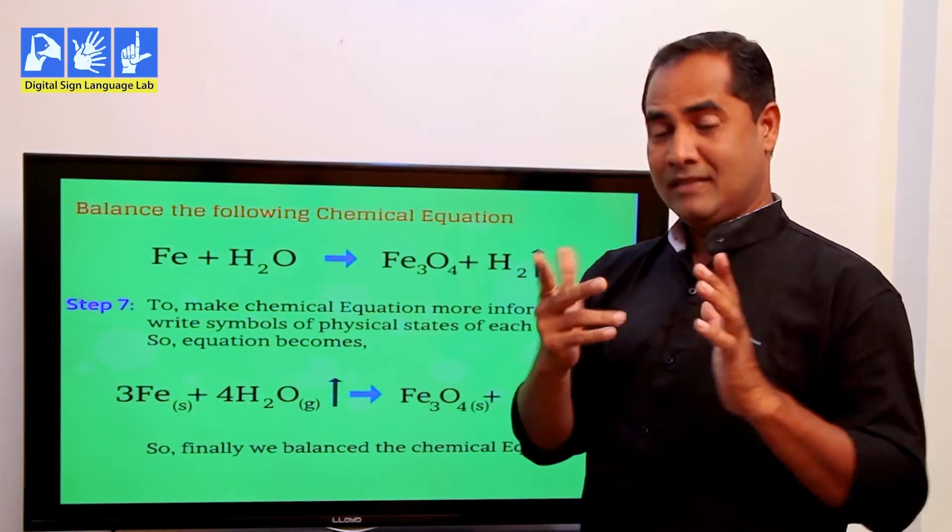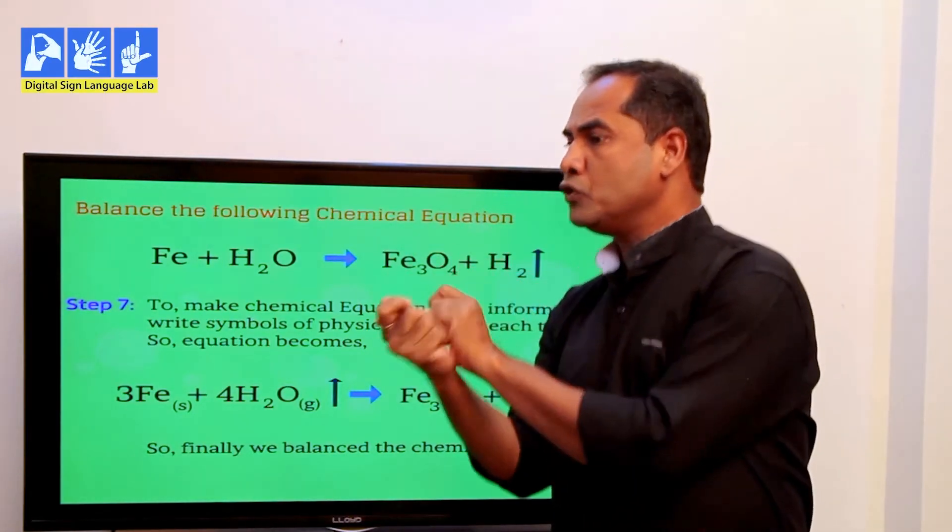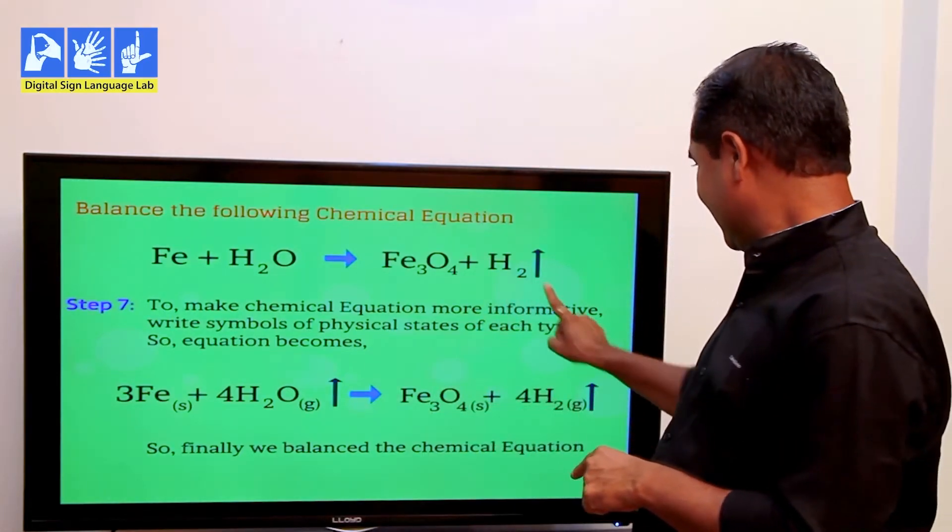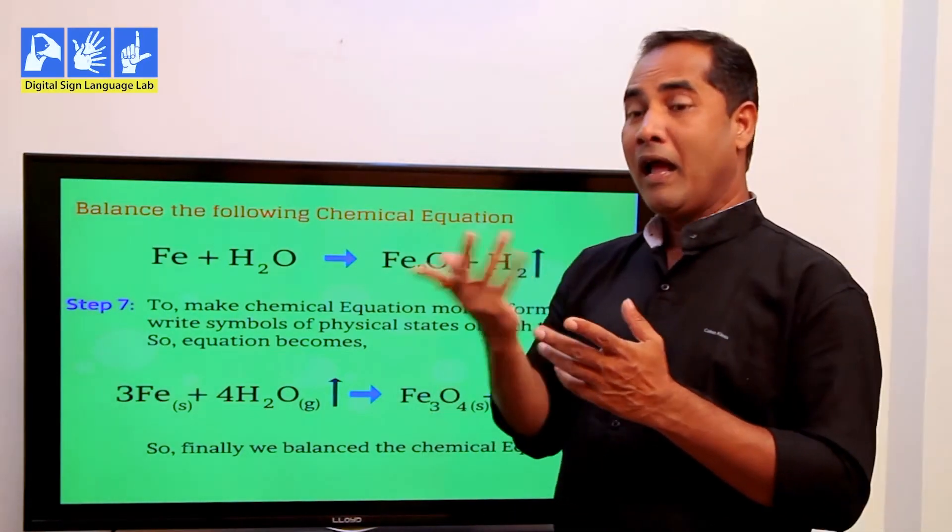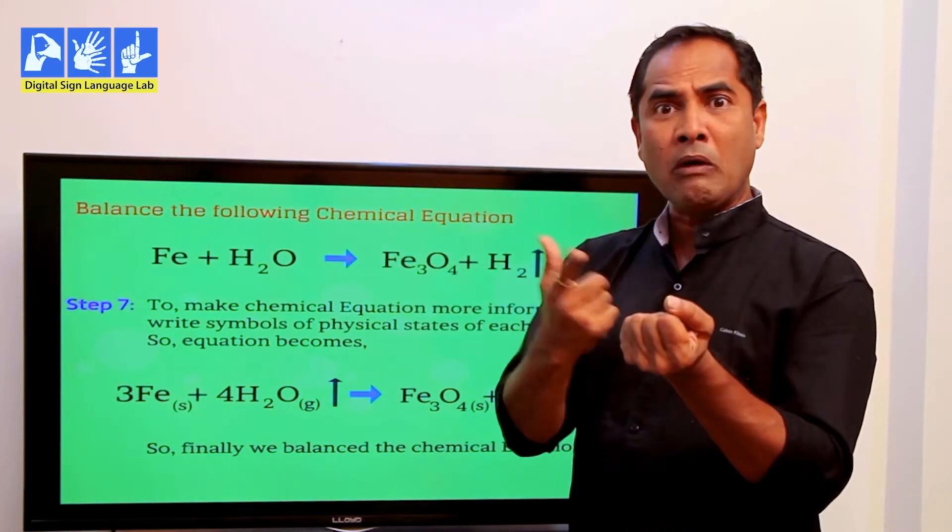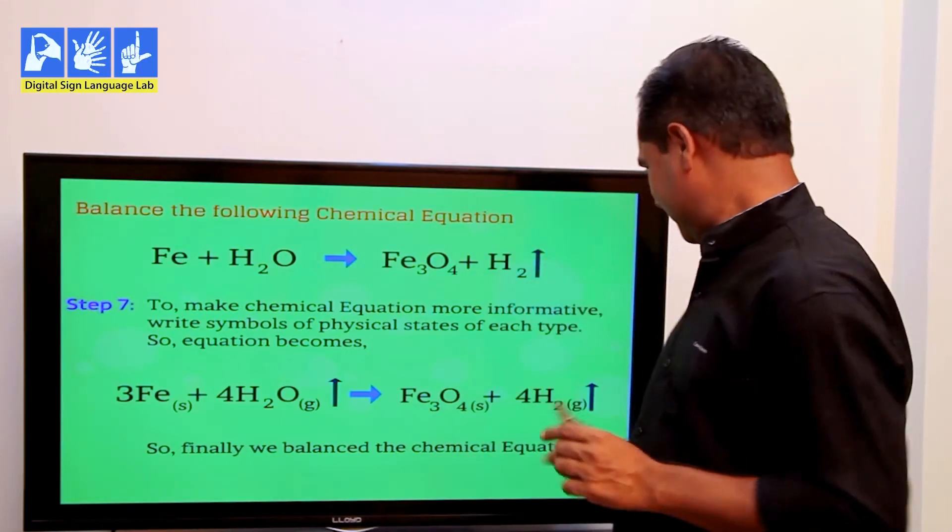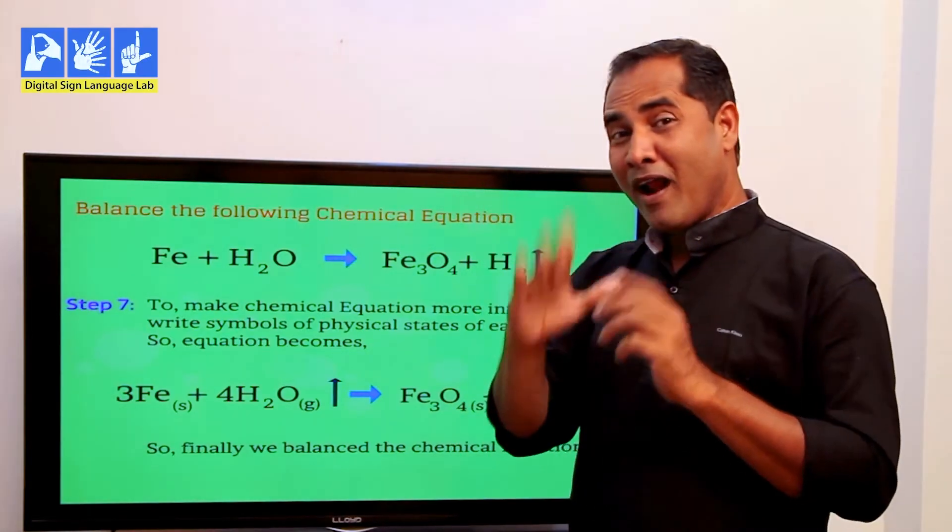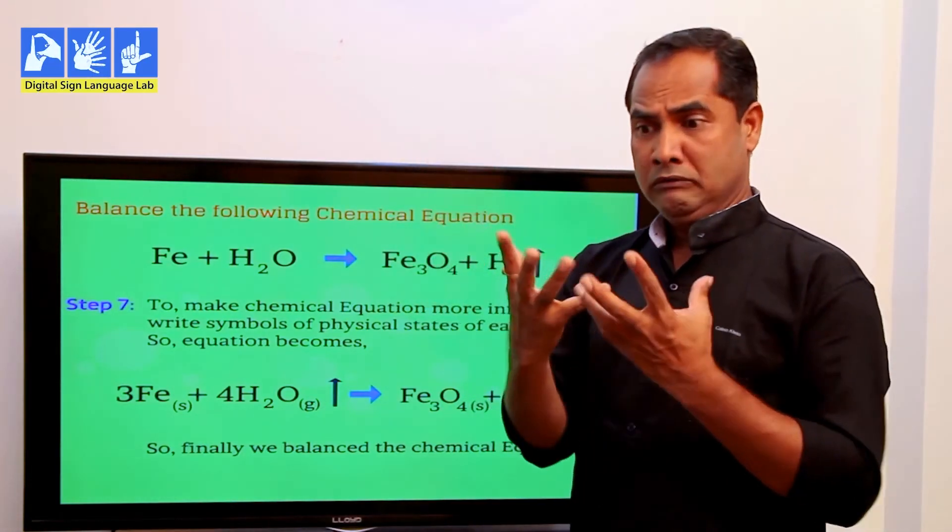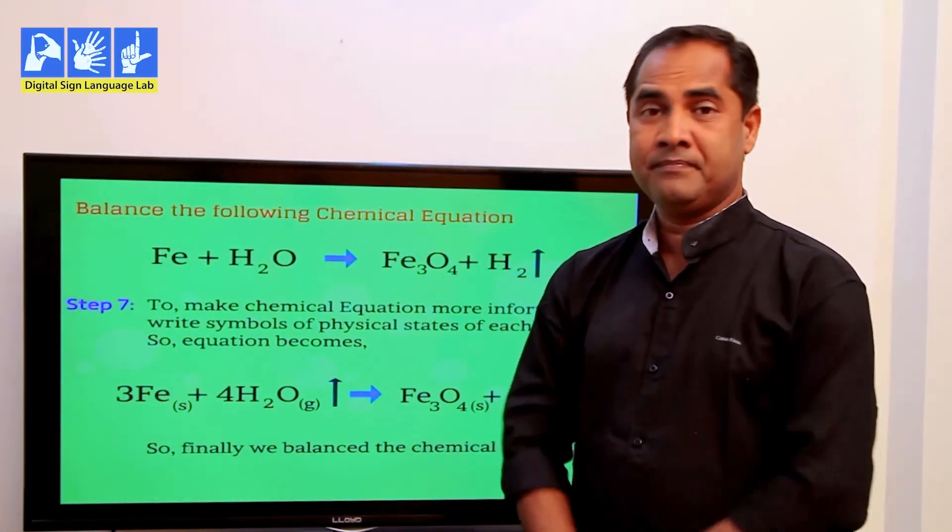This arrow in the chemical equation shows the conversion of reactants to products. And this arrow which is pointing upwards shows when two chemicals react, a gas is emitted. There could be other notations used in chemical equations showing solid, liquid, gas, different things which you would be learning.